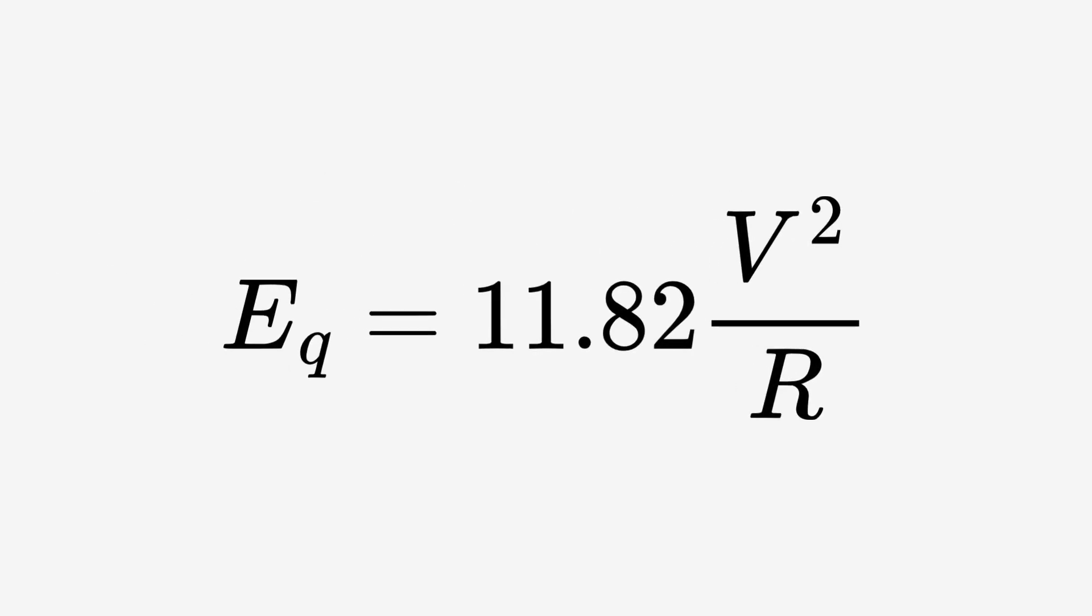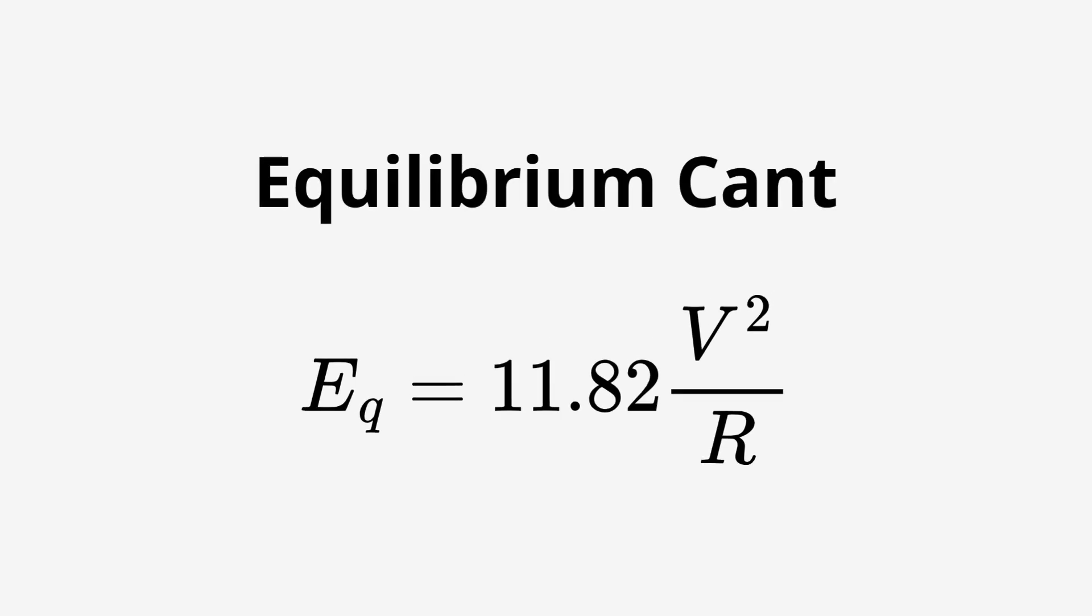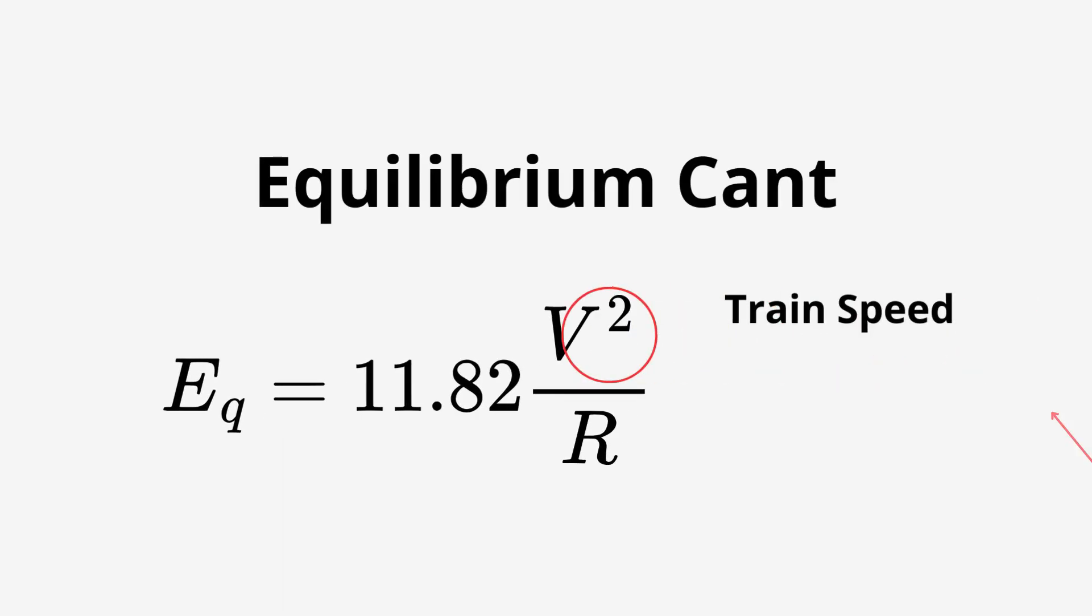Welcome to the Railway Engineer, the YouTube channel where I cover all things railway engineering. This equation is used to work out the equilibrium cant for a curve at a specific radius at a certain speed.